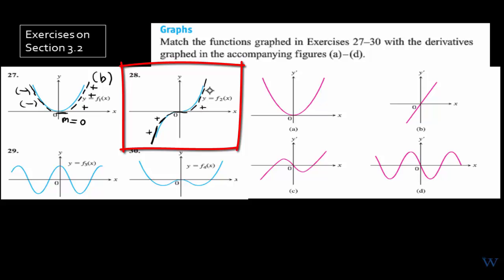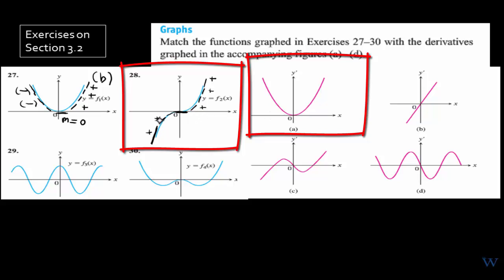All slopes are positive, so the graph of the derivative function should be non-negative. Among the remaining options, it's letter A — it's only zero at the origin, where the tangent line to the blue curve has zero slope. To the left, still positive; at the origin, zero; to the right, still positive, because those are positive slopes. So indeed, 28 matches letter A.